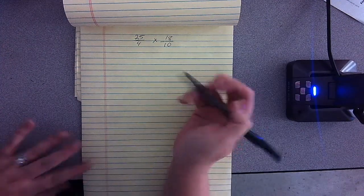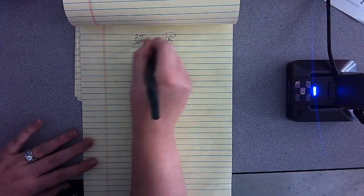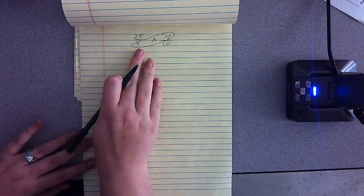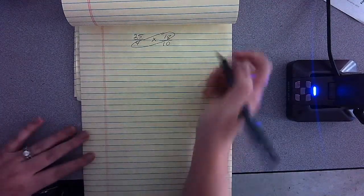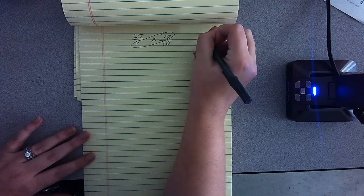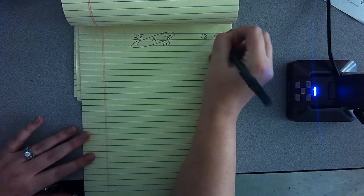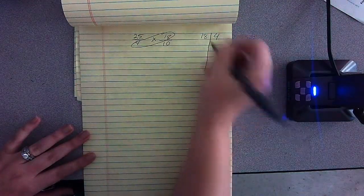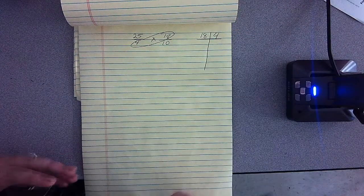So first, I'm going to look at one numerator and its opposite denominator. What I'm going to do is I'm going to take those and I'm going to list the greatest common factors. I'm going to list all the factors.